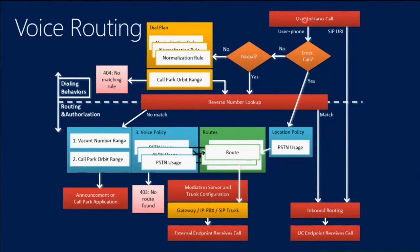The first check we do is: is this an emergency call? If we have emergency calling configured with the location information service, we skip a lot of steps — we know that, for example, 112 is an emergency number, it goes directly to the emergency service. We apply the location policy and make the call. If it's not an emergency call, we look again: is it a global number? Global numbers are E164 numbers — globally unique identifiers starting with a plus.